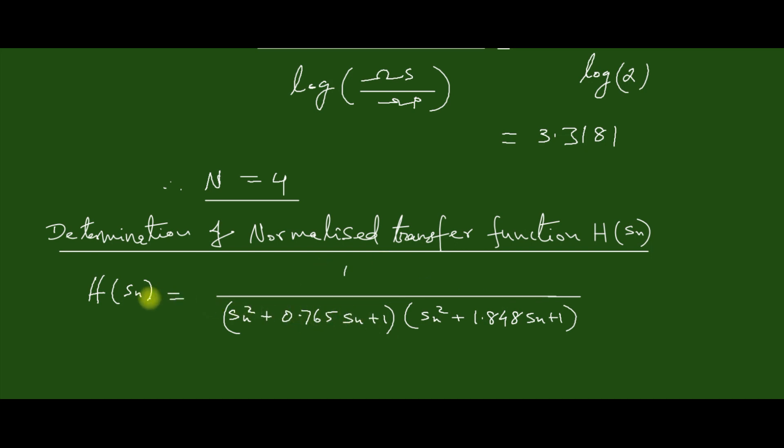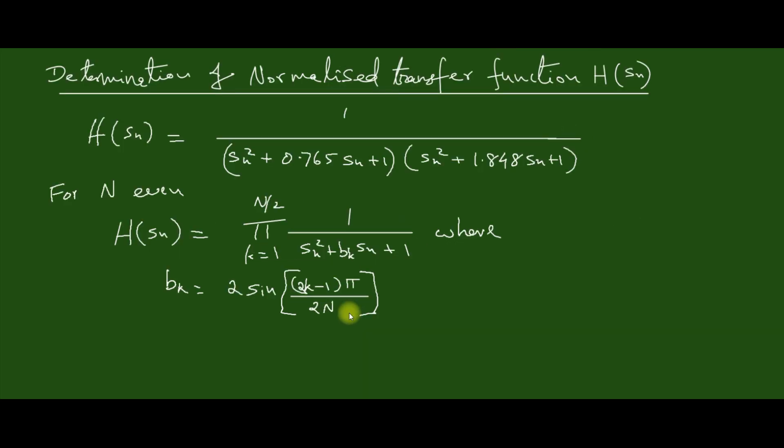Or we can compute using the equation: for N even, H(s_N) equals the product from k=1 to N/2 minus N/2. This one, where B_k is given by this equation. So in our case, N equals 4.